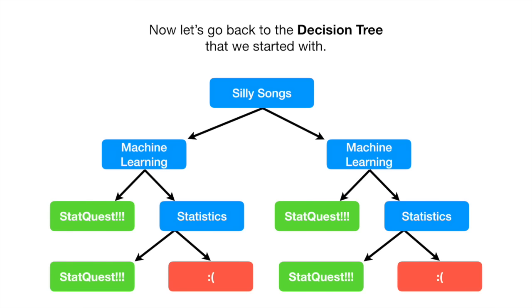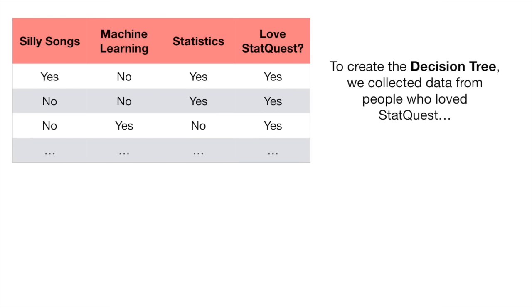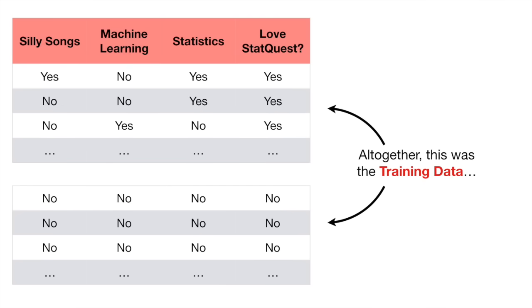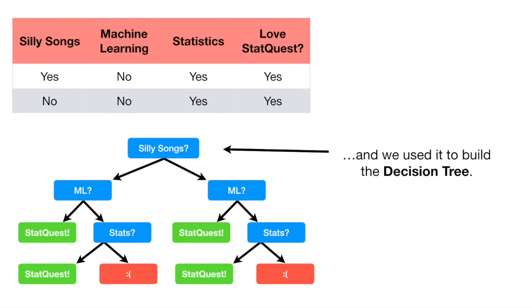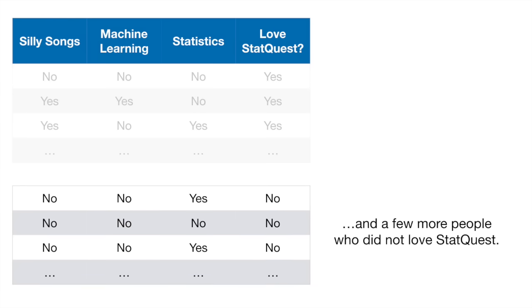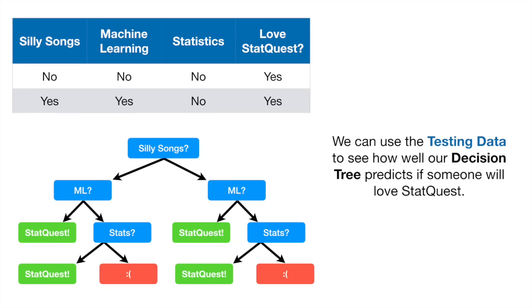Now let's go back to the decision tree we started with. We wanted to classify if someone loves StatQuest based on a few questions. To create the decision tree, we collected data from people who love StatQuest and from people who did not — altogether, this was the training data, and we used it to build the decision tree. Then we got data from a few more people who love StatQuest and a few who did not, forming the testing data. We can use the testing data to see how well our decision tree predicts if someone will love StatQuest.